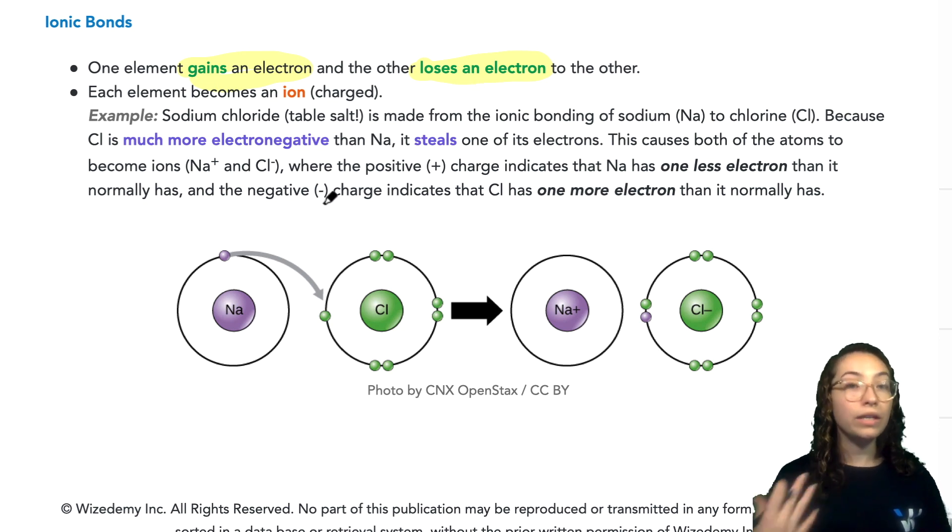So in this case, because there is full gain or losing of electrons, each of these atoms, each of these elements will actually become an ion, which means that they are charged. So a great example of this that you encounter every day without even knowing is table salt or sodium chloride.